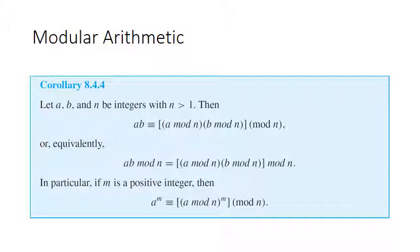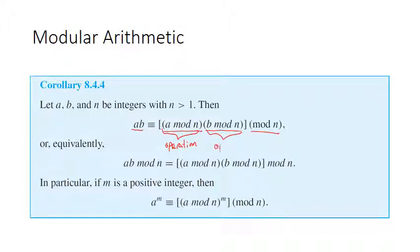Here's a corollary to the last slide that will be very useful for our encryption algorithms. Let a, b, and n be integers with n greater than 1. Then a times b is congruent to (a mod n) times (b mod n) modulo n. This is the first time we've actually mixed together the two different notations in one statement — the mod n without parentheses is an operation returning remainders, while the triple bar notation is a statement of congruence.